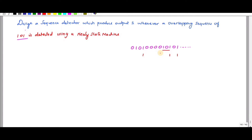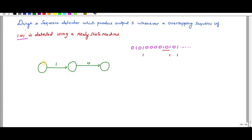To design the Mealy state machine: since the number of bits is three, you have to draw three circles. Then write one-zero, because the sequence starts from one then zero. I am going to assign values: this first state as A, this one as B, and this one as C.